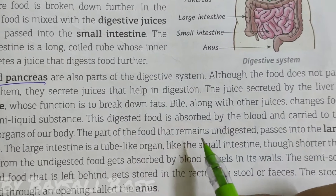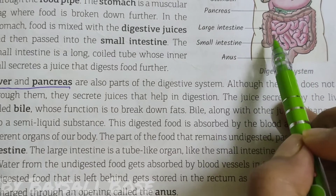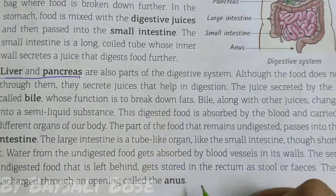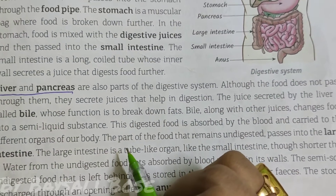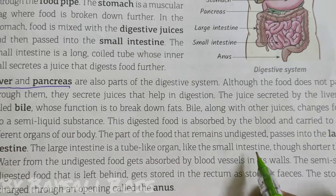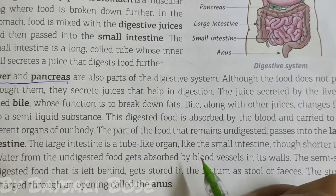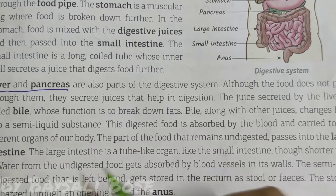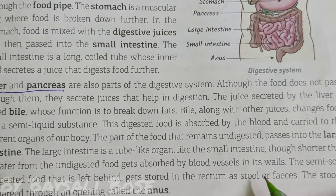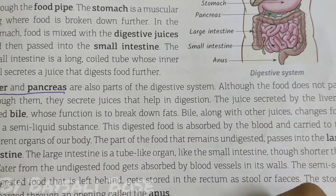The part of the food that remains undigested passes into the large intestine. The large intestine is a tube-like organ, shorter than the small intestine. Water from the undigested food gets absorbed by the blood vessels in it. The semi-solid undigested food that is left behind gets stored in the rectum as stool or faeces. The stool is discharged through an opening called the anus.